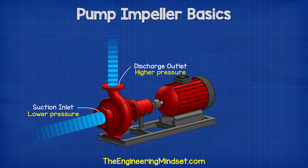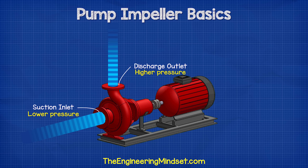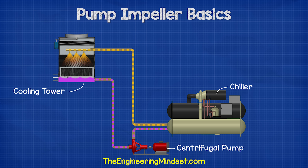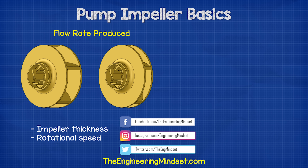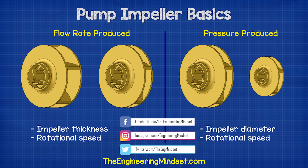So the discharge outlet is therefore at a higher pressure than the suction inlet. The high pressure at the discharge allows us to force the fluid through pipes and into a storage tank or around a pipe system. The thickness of the impeller and the rotational speed affects the volume flow rate from the pump, but the diameter of the impeller and the rotational speed will increase the pressure it can produce.